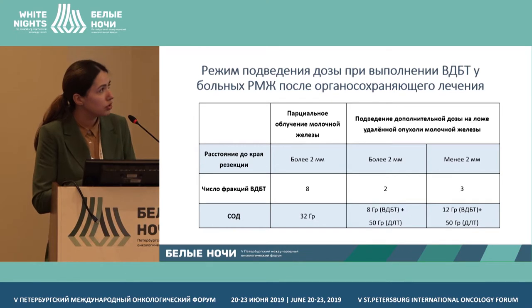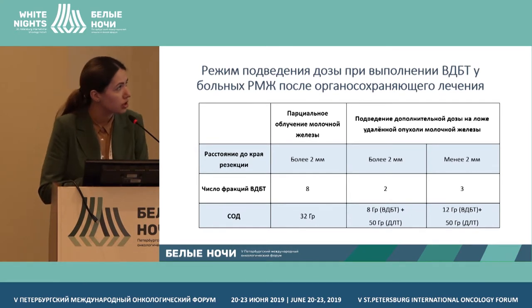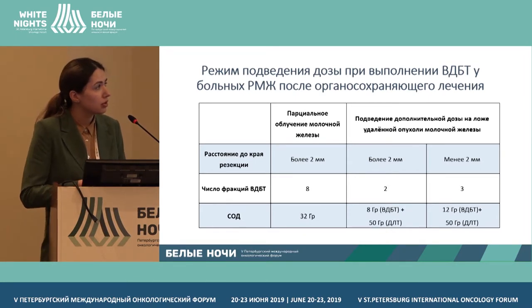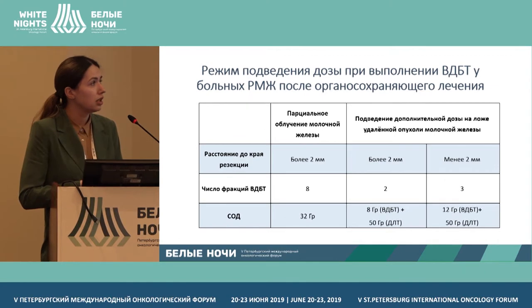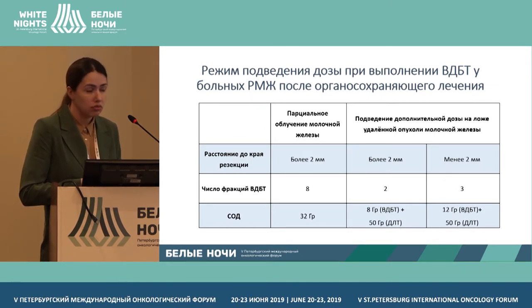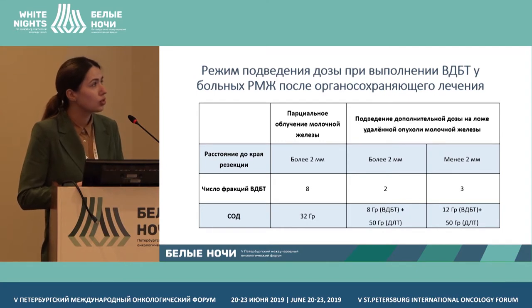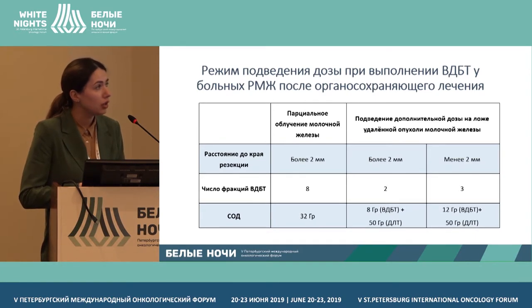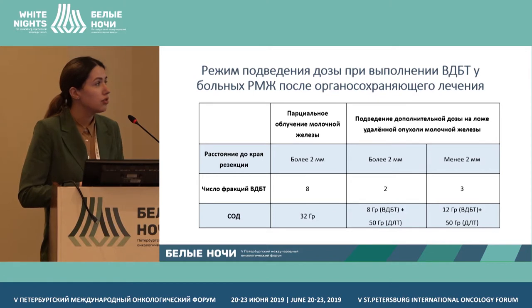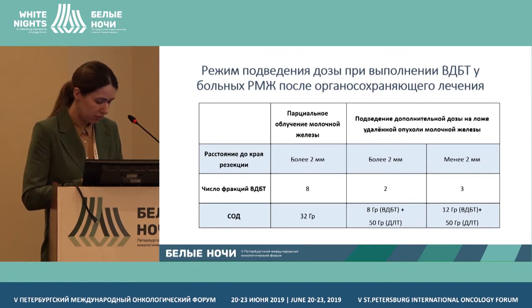For partial radiotherapy, we give eight sessions. On Monday morning the interstices are inserted; the first session is Monday evening and the eighth session is on Friday morning, completing treatment in five days. For boost — an addition to the tumor bed after remote therapy — the number of sessions depends on resection margins: three sessions if margins are less than two millimeters, and two sessions if margins are more than two millimeters. Treatment takes one to two days.